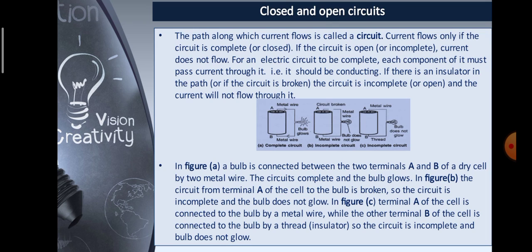What is a closed and open circuit? The path along which current flows is called a circuit. Current flows only if the circuit is complete or closed. If the circuit is open or incomplete, current does not flow. For an electric circuit to be complete, each component of it must pass current through it — that is, it should be conducting. If there is an insulator in the path or if the circuit is broken, the circuit is incomplete or open, and the current will not flow through it.